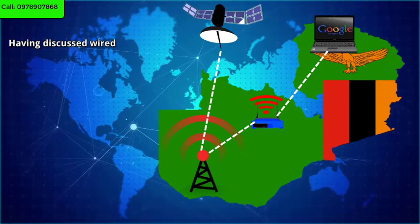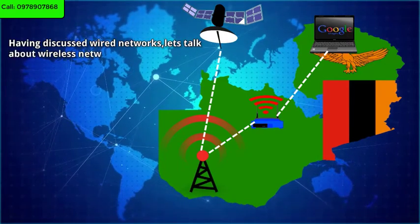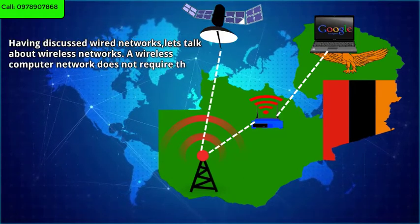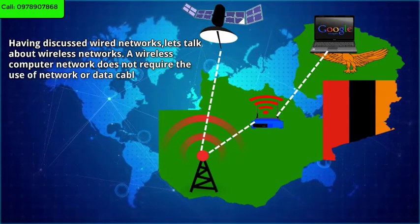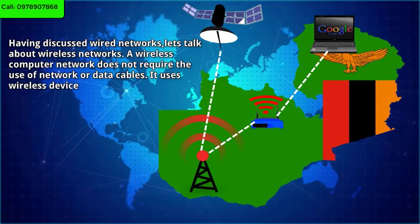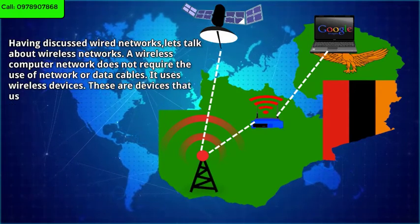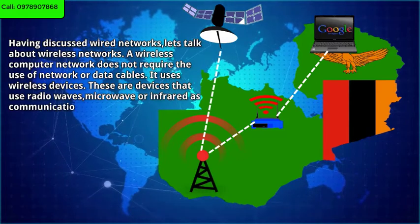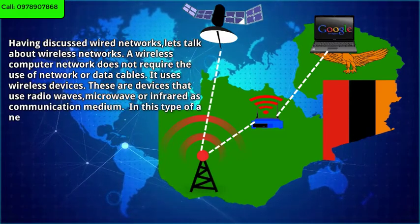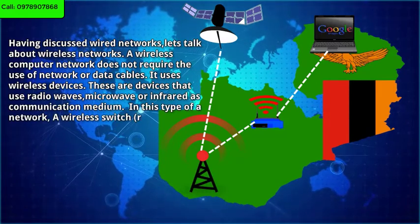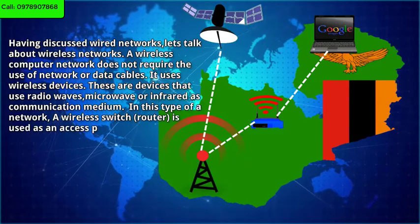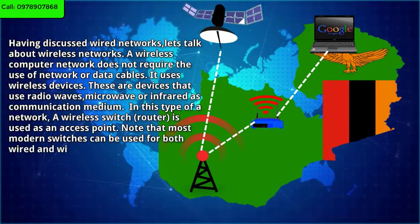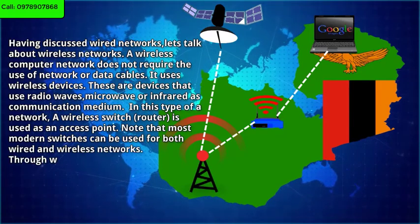Having discussed wired networks, let's talk about wireless networks. A wireless computer network does not require the use of network or data cables. It uses wireless devices — devices that use radio waves, microwave or infrared as a communication medium. In this type of network, a wireless switch or router is used as an access point. Most modern switches can be used for both wired and wireless networks.